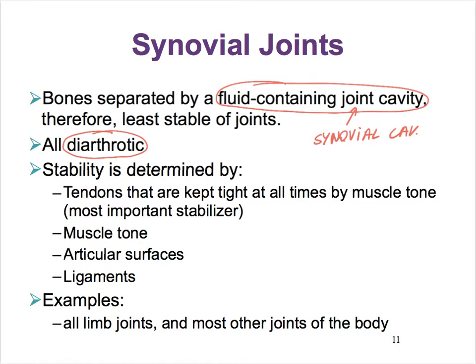For instance, if you have this bone here and this bone here, notice that their surfaces where they meet are two very flat surfaces. So the chances for this top bone to possibly slide out of the joint are very high.